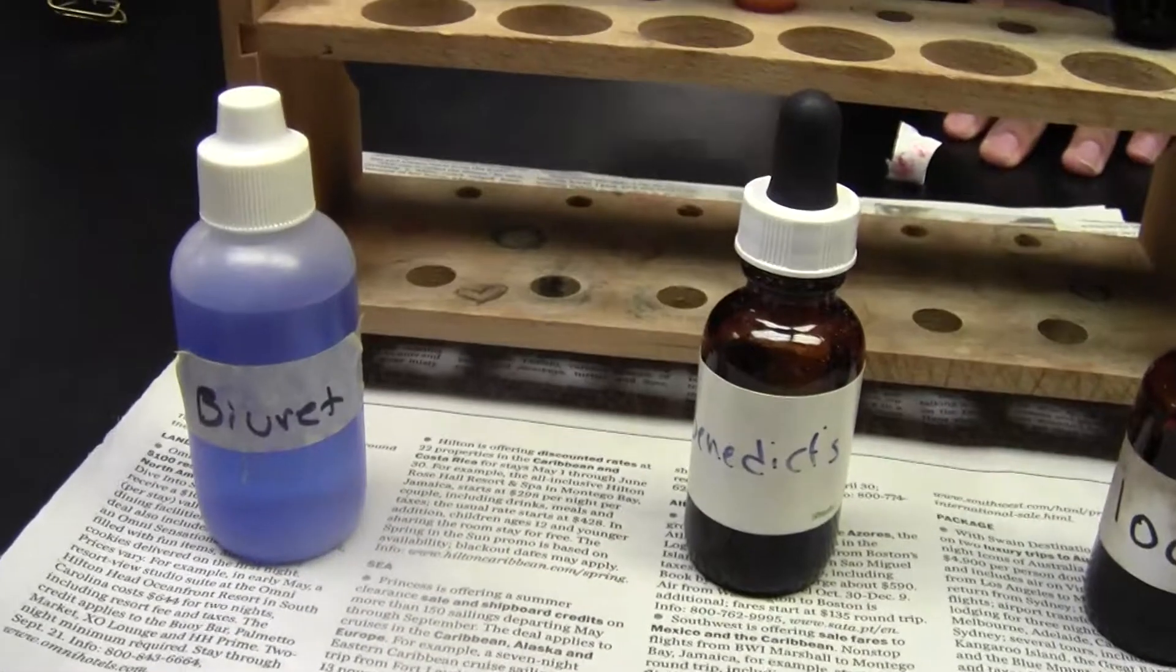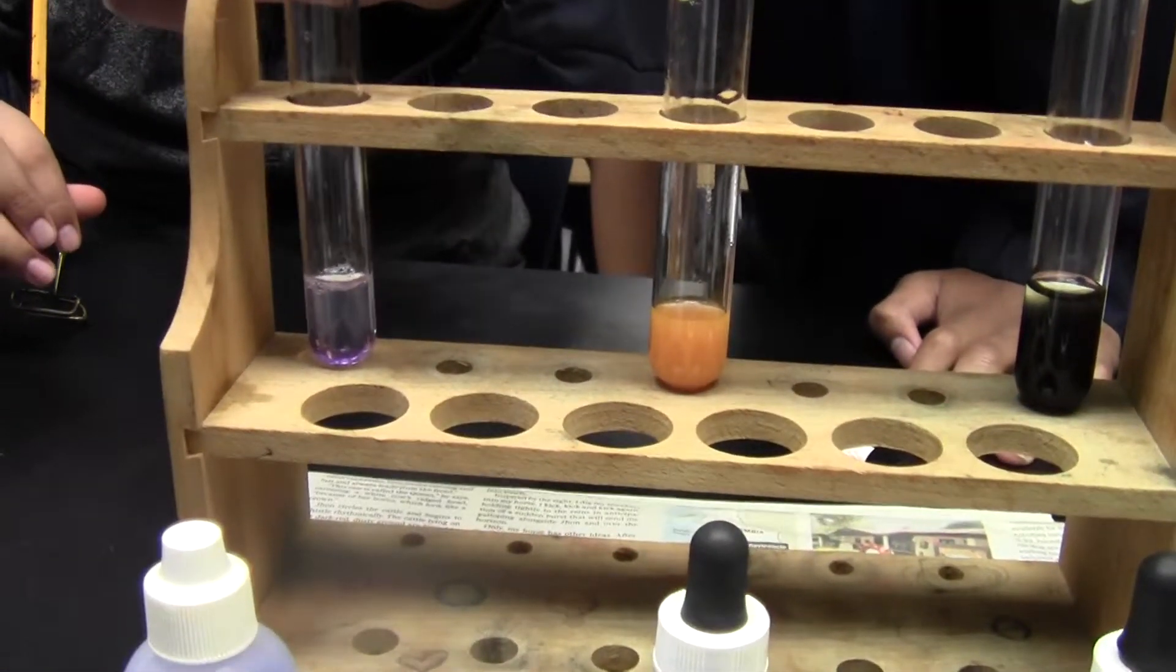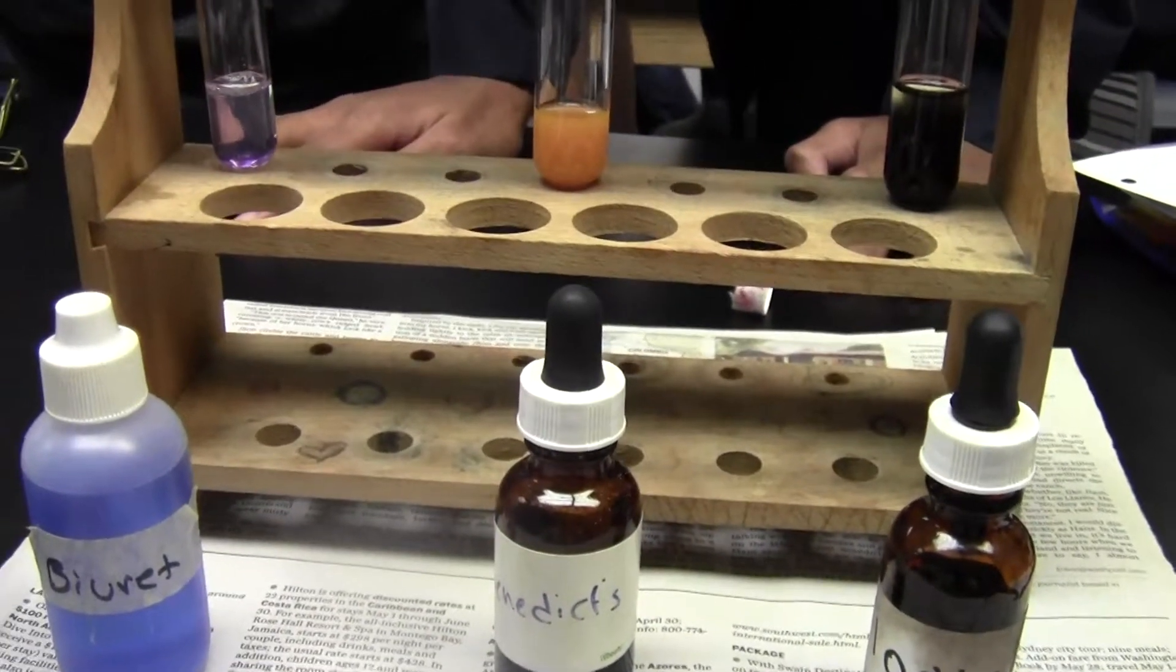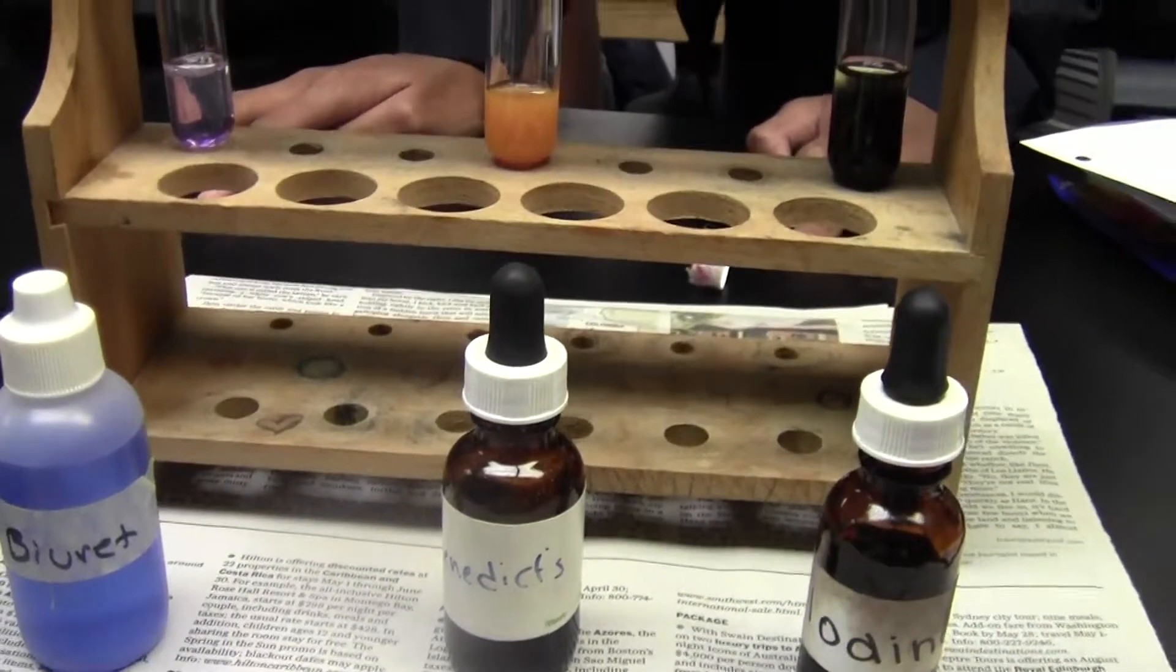For protein, it's the same thing and it turned purple afterwards. So you can now identify what a positive starch, glucose, and protein test looks like.